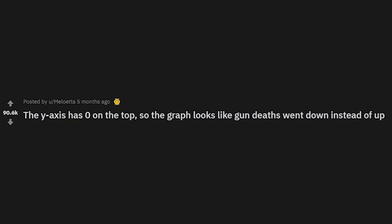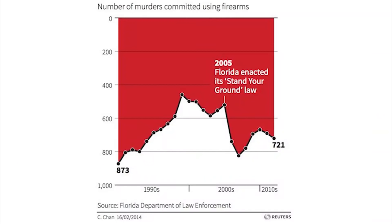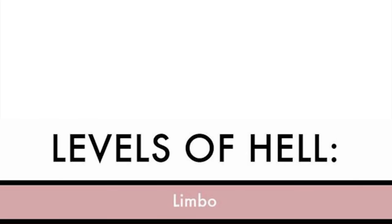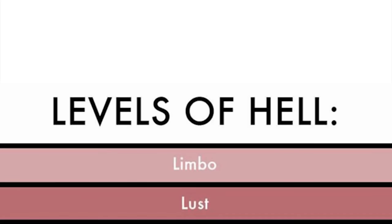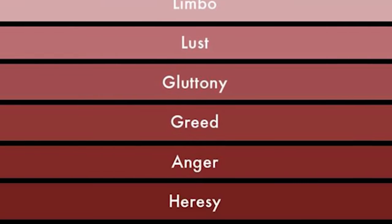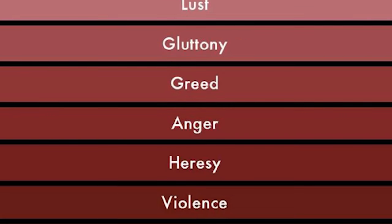The Y-axis has zero on the top so the graph looks like gun deaths went down instead of up. Well, on the bright side, we have not been as bad as the late 2000s — you see that big dip? I'm just trying to look on the bright side.